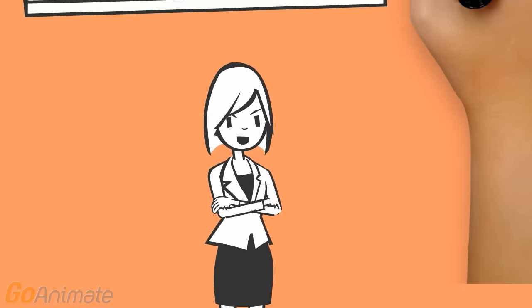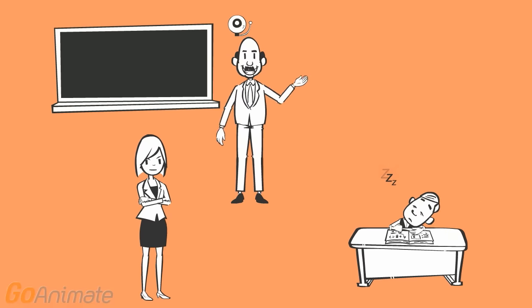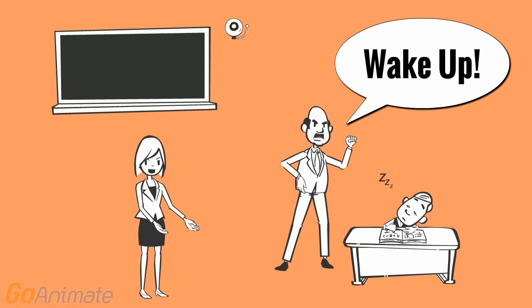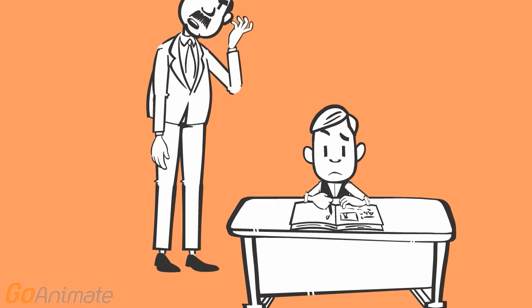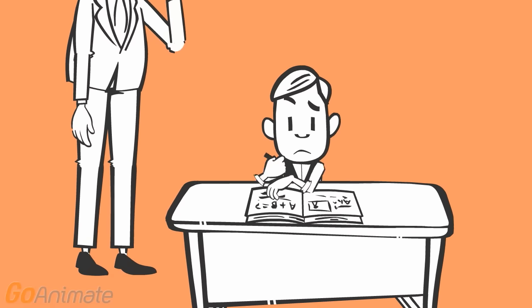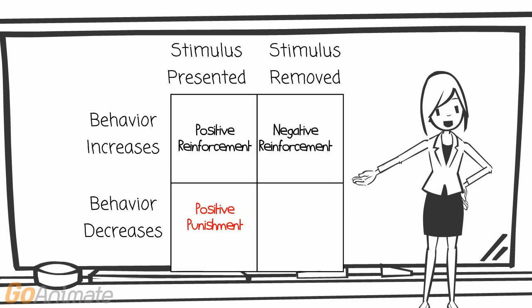For our third example, we have a student who has fallen asleep during class. As a consequence, the teacher may get upset and verbally scold the student to wake him up. The misbehavior of sleeping would then stop and the student would start to focus on classwork again. In this instance, a stimulus was being presented, the verbal scolding, in order for the misbehavior to decrease. So we would call this positive punishment.